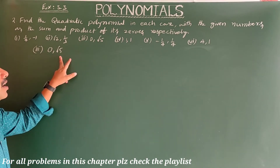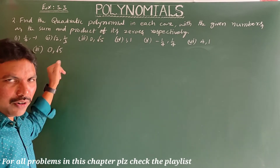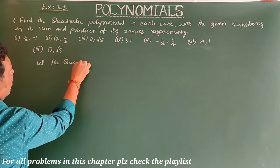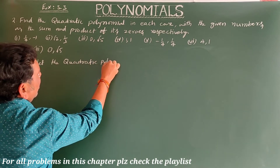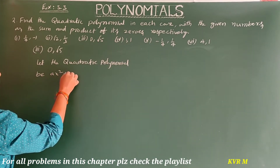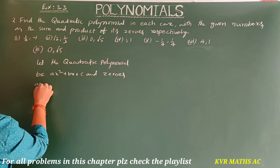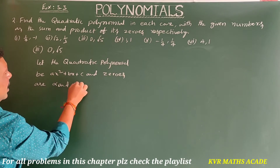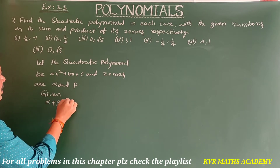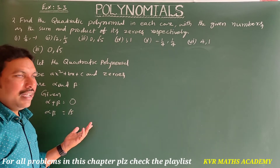Third case: sum=0, product=√5. Let the quadratic polynomial be ax²+bx+c with zeros α and β. Given α+β = 0 and αβ = √5.